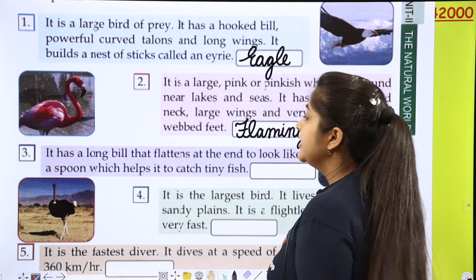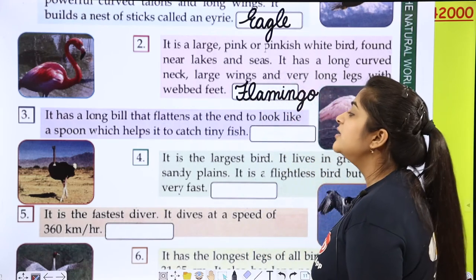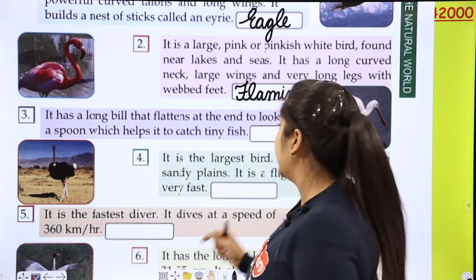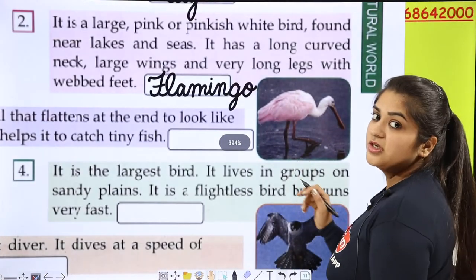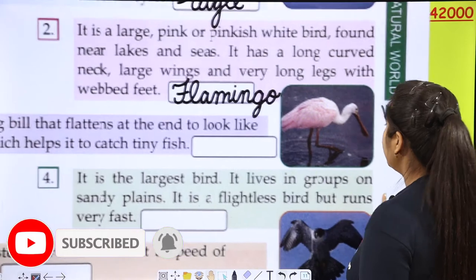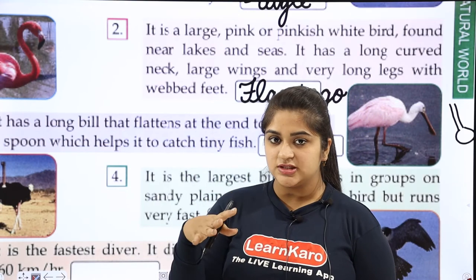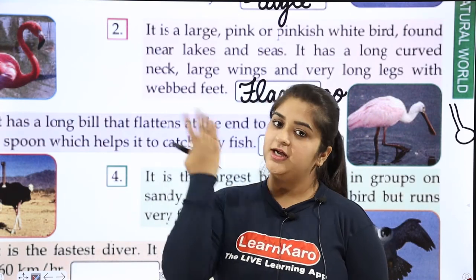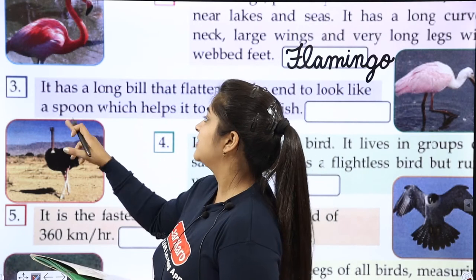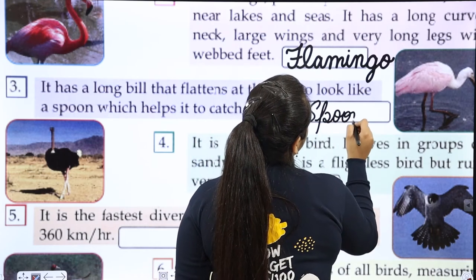Third bird. It has a long bill that flattens at the end to look like a spoon, which helps it to catch tiny fish. The spoon shape of the bill catches tiny fish. The spoon-shaped bill is used to catch these little fish. And the name of this bird is Spoonbill.